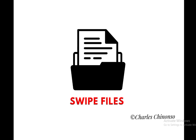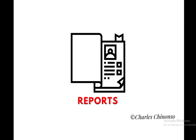The seventh and last lead magnet idea is reports. Reports are like mini e-books because they are usually very short — typically between two to five pages, whereas an e-book could be between 10 to 20 pages. Just ensure your report addresses your audience's pain points and talks about the problem they are experiencing at that moment. So these are the seven fantastic and super easy lead magnet ideas you can use to attract contacts and grow your WhatsApp list.